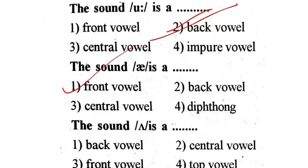Next question: The sound A is a dash — first one, back vowel. Second one, central vowel. Third one, front vowel. Fourth one, top vowel. Please subscribe to my channel. Every video covers previous and practice bits for every subject and topic, including methodology. The correct answer is second one — central vowel.